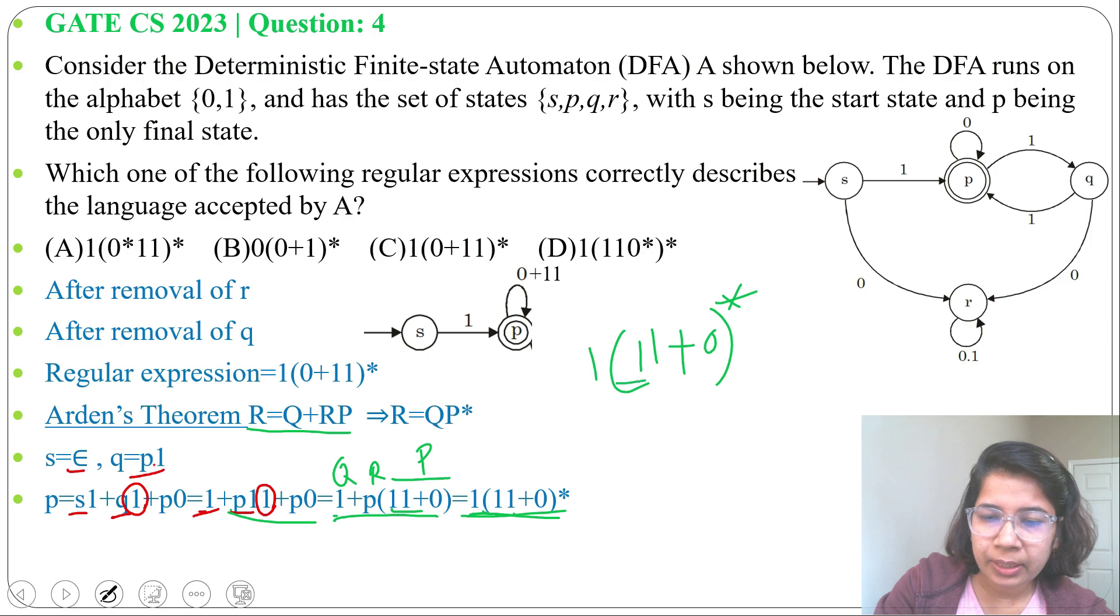We can alter these two. So you can write 1(0+11) whole Kleene closure. So answer is option C.